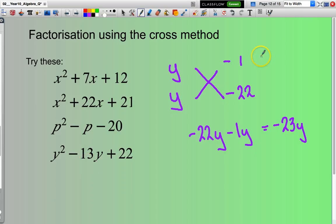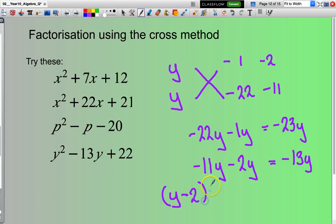Okay, what's our next factors? Well 22, the next one will be negative 2, negative 11. So negative 11 times y is negative 11y. Negative 2 times y, so I'm going to subtract another 2y. That equals negative 13y. Now is that negative 13, the value of that coefficient there, the same as this value of this coefficient? Yes it is. So I have my solution there: y minus 2 in brackets, y minus 11.